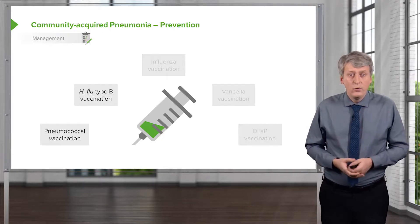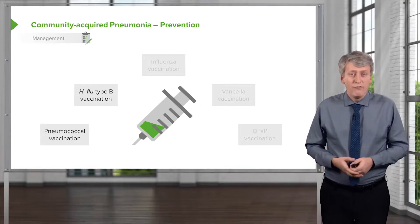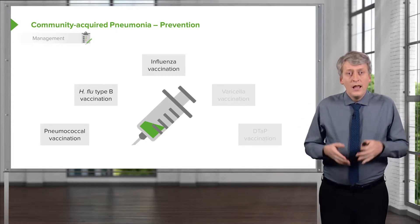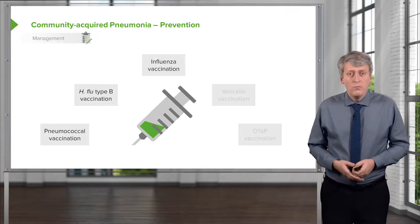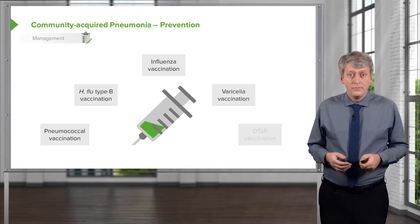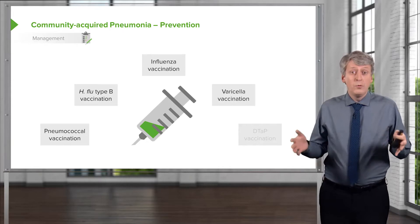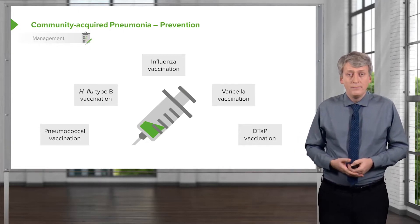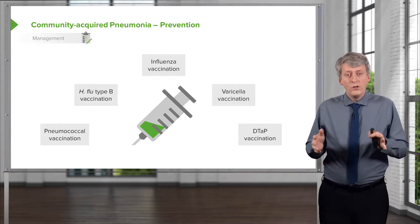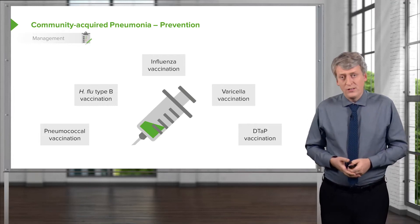Hib, or the Haemophilus influenzae type B vaccination, has been amazing at preventing severe pneumonia, which used to happen with Haemophilus influenzae type B — I've never seen a case because of vaccination. Influenza vaccination is important in preventing pneumonia because it prevents superinfection that can happen after influenza. Same thing with varicella — it reduces the likelihood of superinfection in the lungs. And don't forget, the DTaP vaccine does prevent pertussis, which can present with a pneumonia-like picture. So we have many vaccines that can prevent the likelihood of patients developing pneumonia.